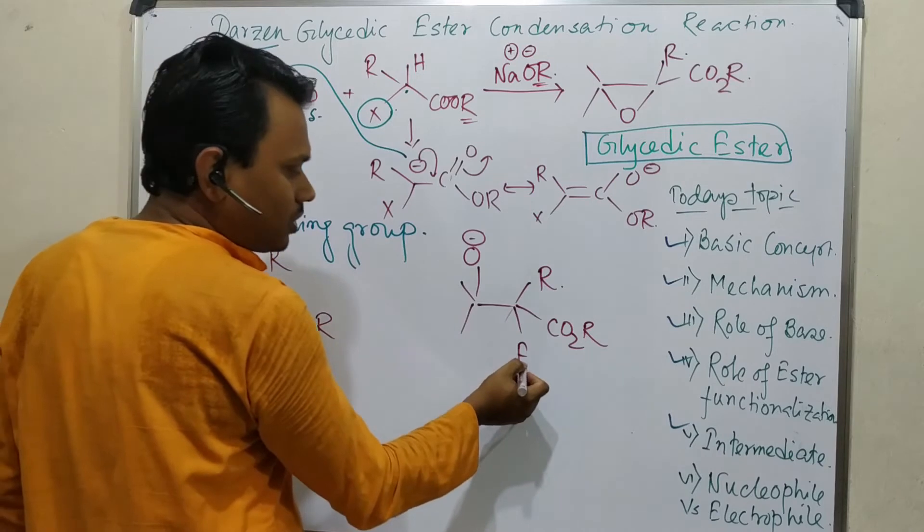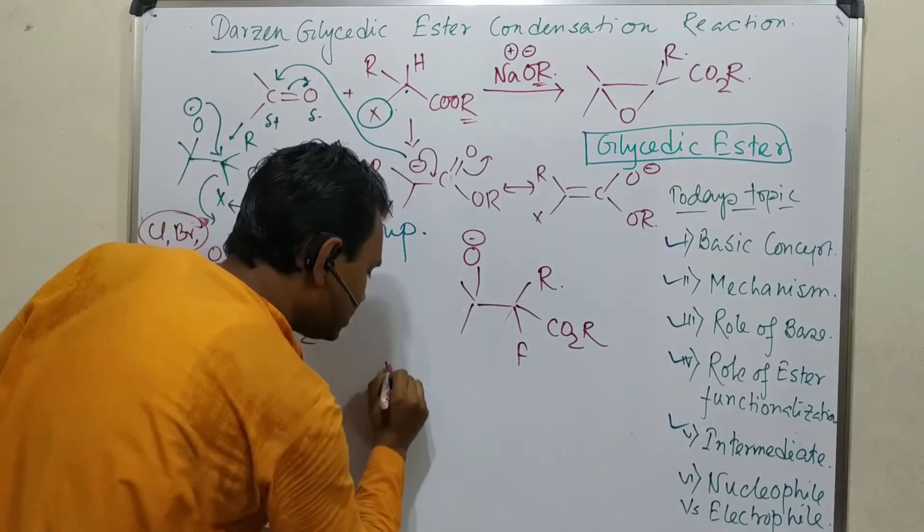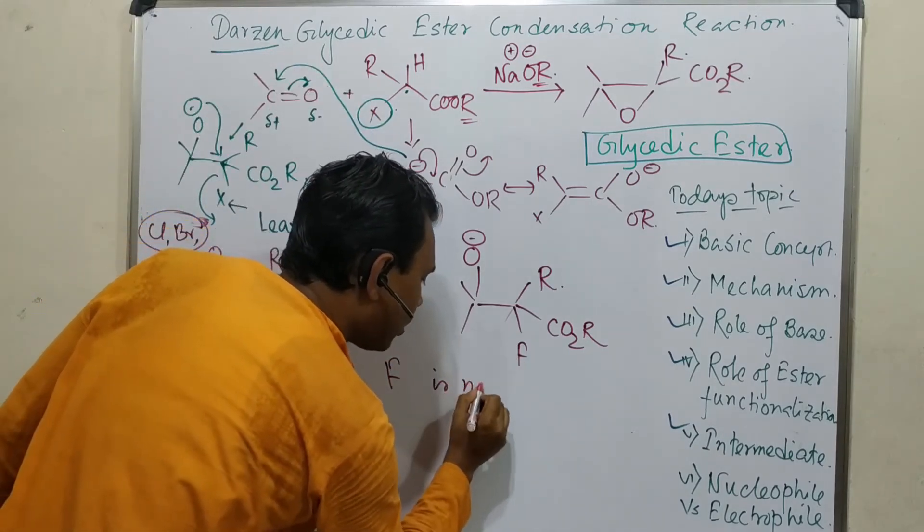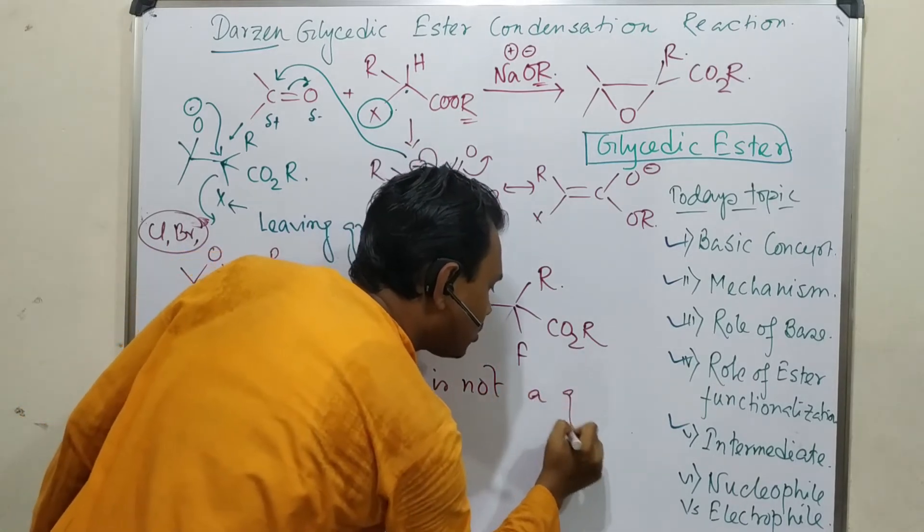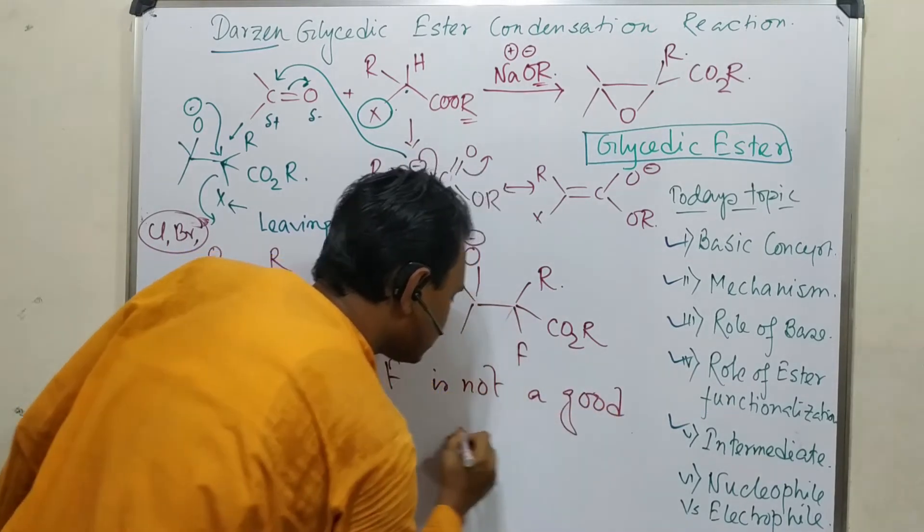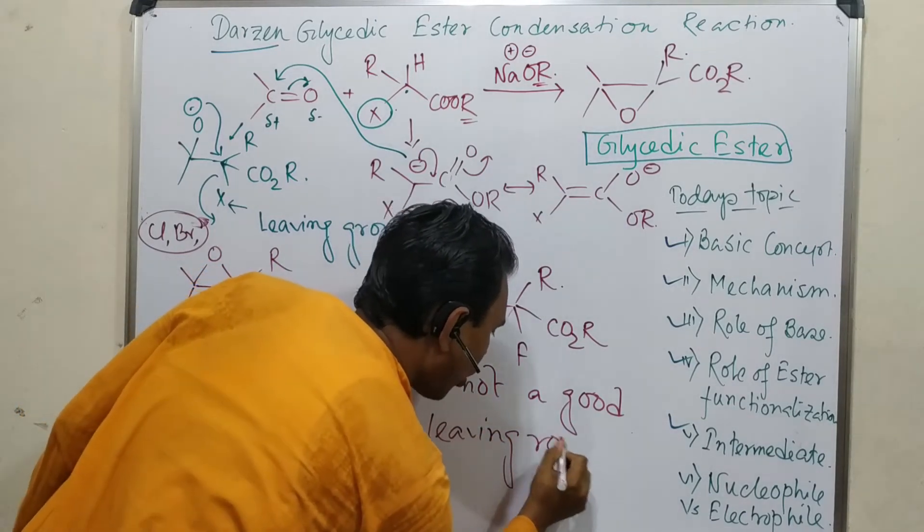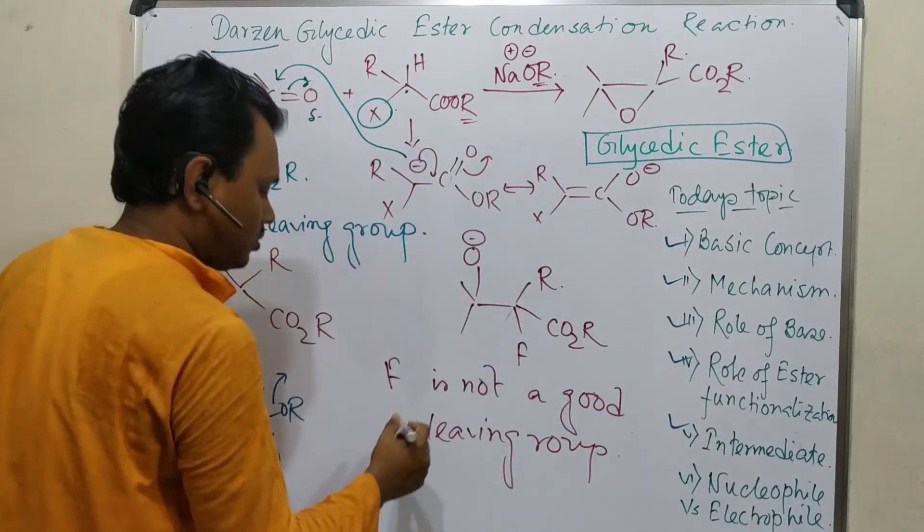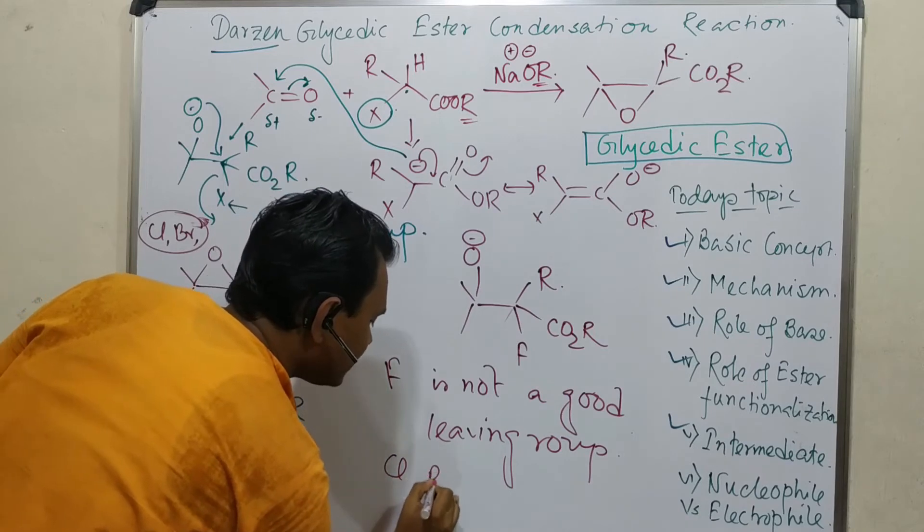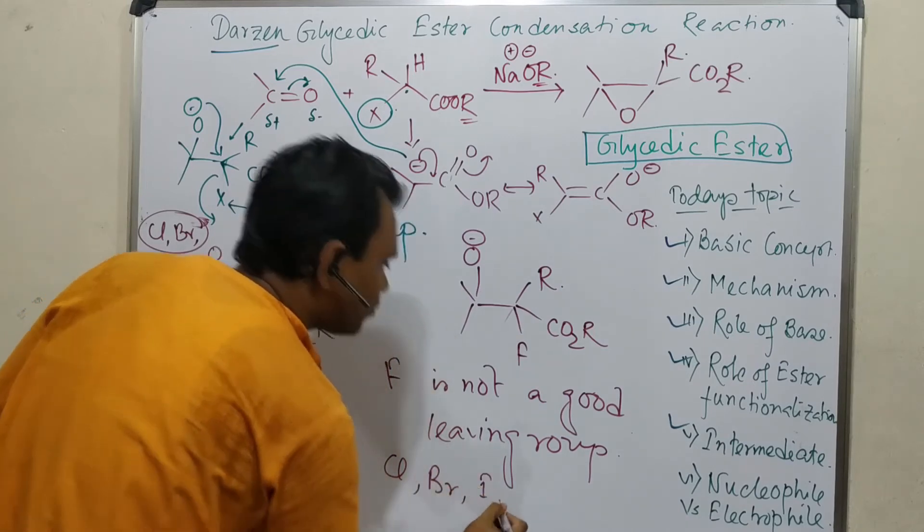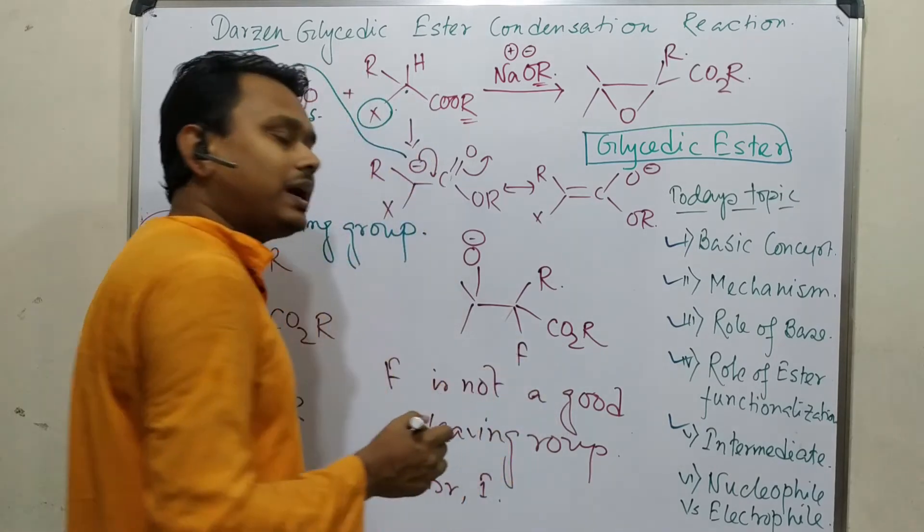This fluorine is not a good leaving group compared to chloride, bromide, iodide, etc. Why? The charge is localized on this fluorine. I have explained - I have made a dedicated video on nucleophile and leaving group character of different groups.